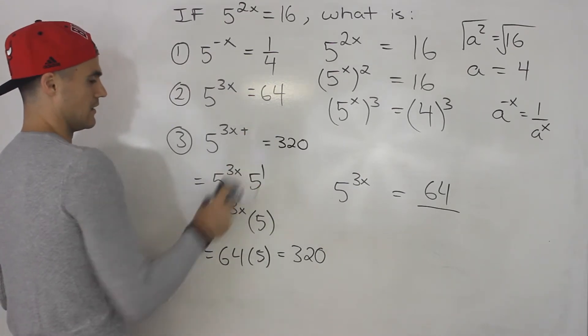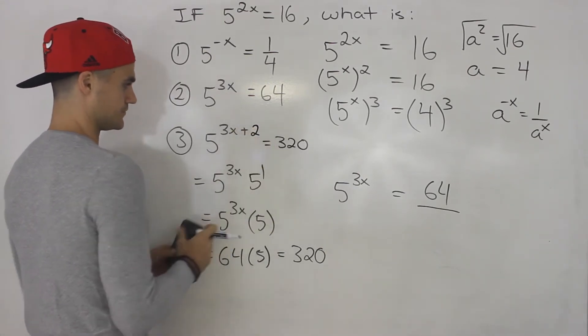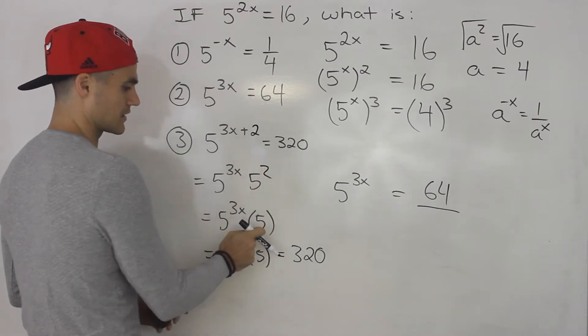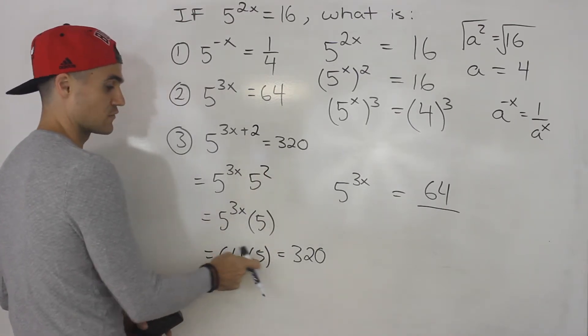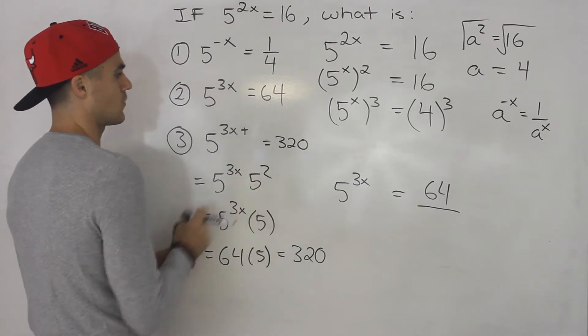Now, if this was like 3x plus 2, this would end up being a 2 here. This would end up being a 25. So the answer would be 64 times 25, right? But this is just a 1.